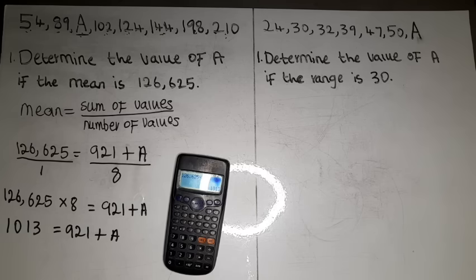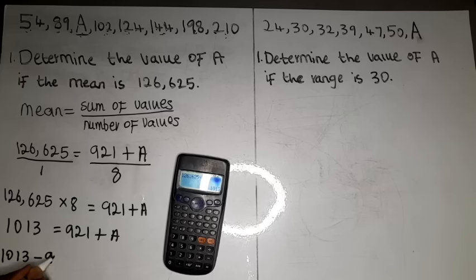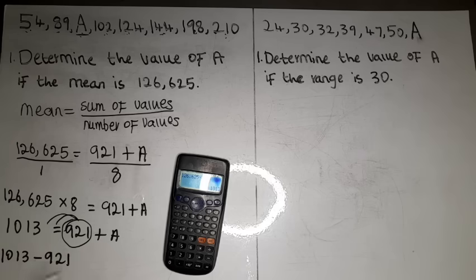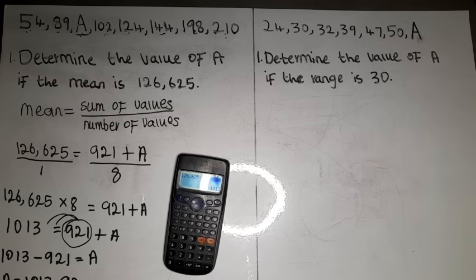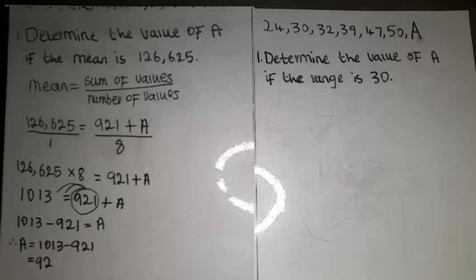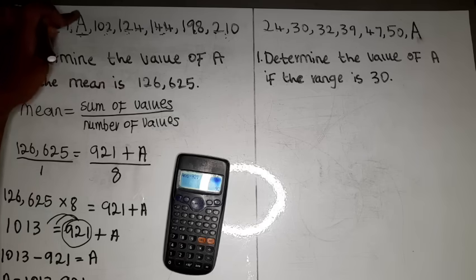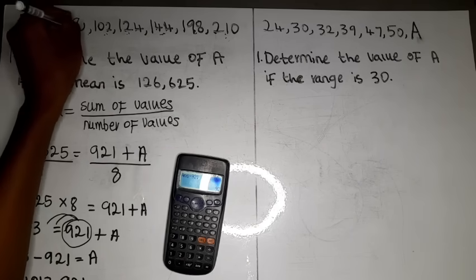So we have 1013 = 921 + a. Now we group like terms — numbers on one side, letters on the other. Because 921 crosses the equal sign, it changes from positive to negative, giving us 1013 − 921 = a. So a equals 1013 − 921, which gives us 92. The value of 'a' is 92, and our sequence is now complete.